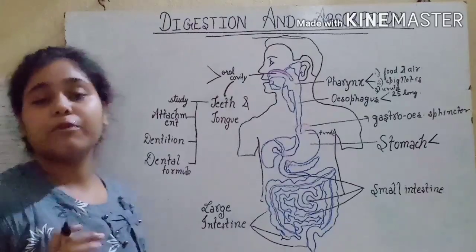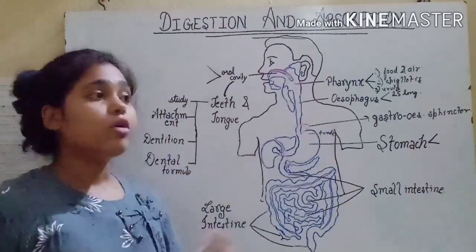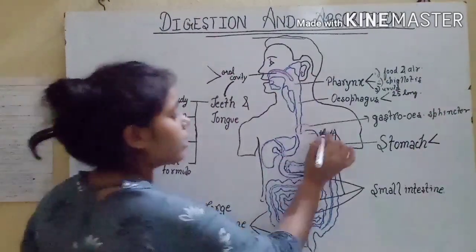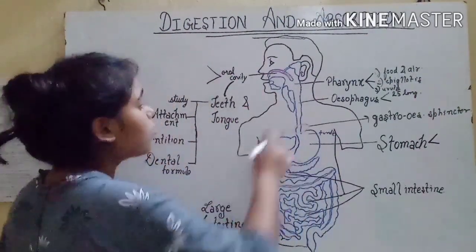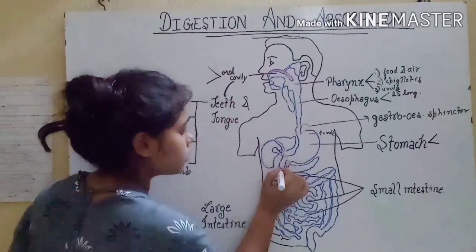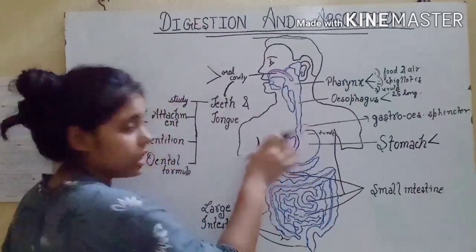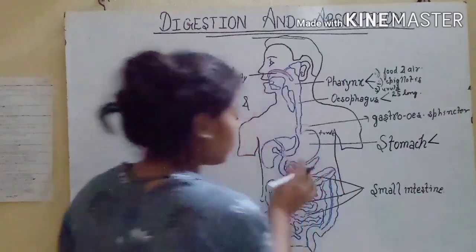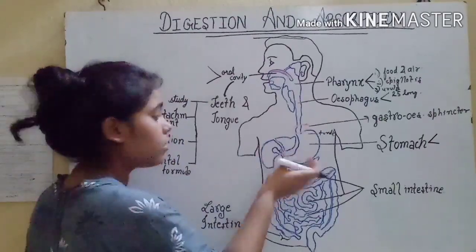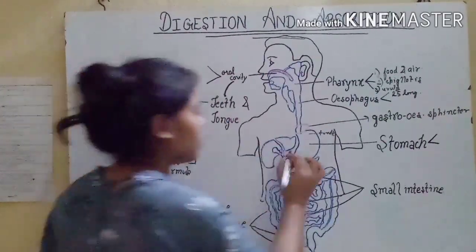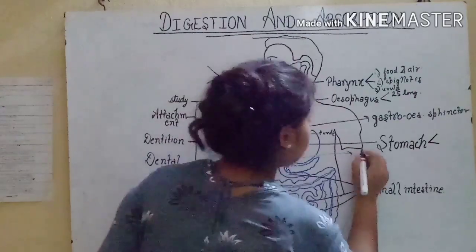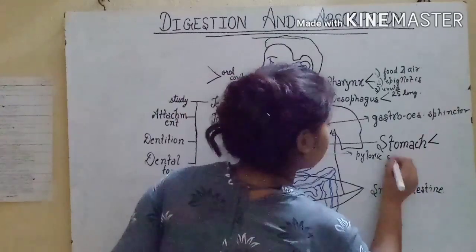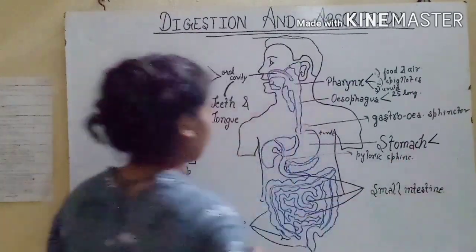This is why the fundic part is the main part of the stomach. After the stomach, the food goes into the small intestine with the help of a sphincter located at the pyloric region of the stomach. From the pyloric region, food enters the duodenum, which is why this sphincter is known as the pyloric sphincter.